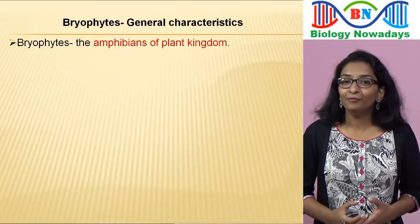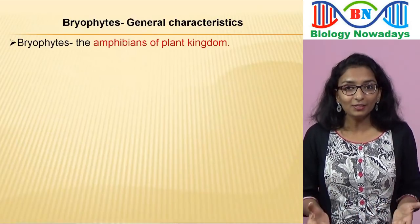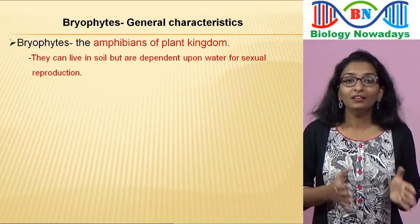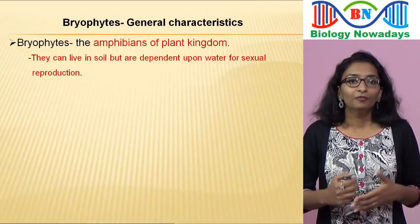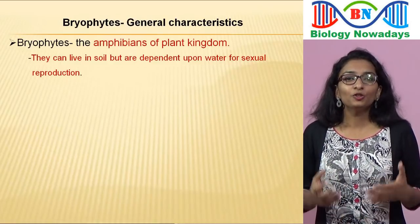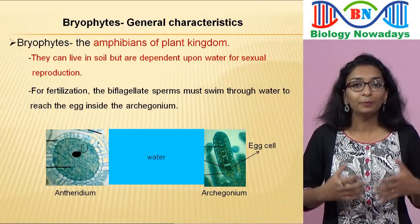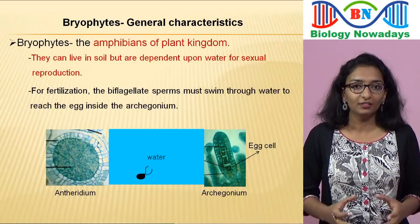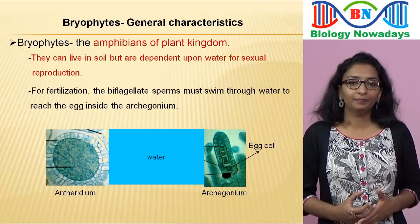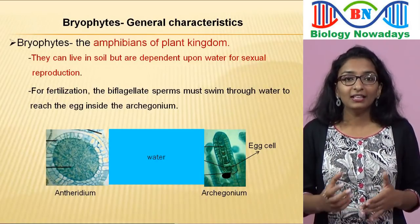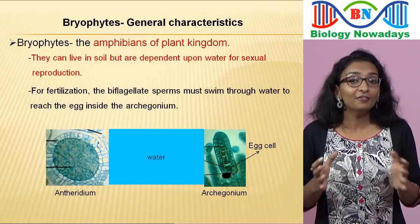Bryophytes are called amphibians of the plant kingdom because they can live in soil but are dependent upon water for sexual reproduction. For fertilization to occur in bryophytes during sexual reproduction, the sperms must swim through water to reach the egg inside the archegonium. So fertilization in bryophytes occurs mostly after a rain.